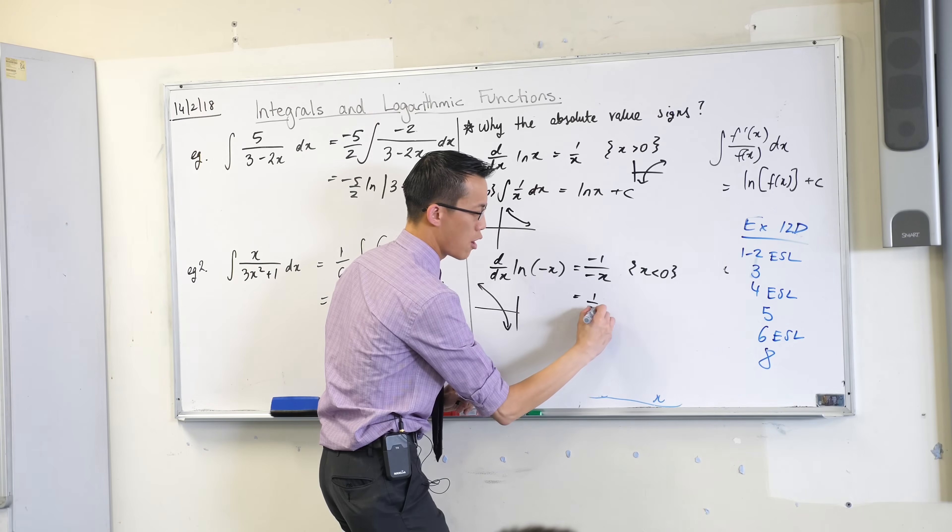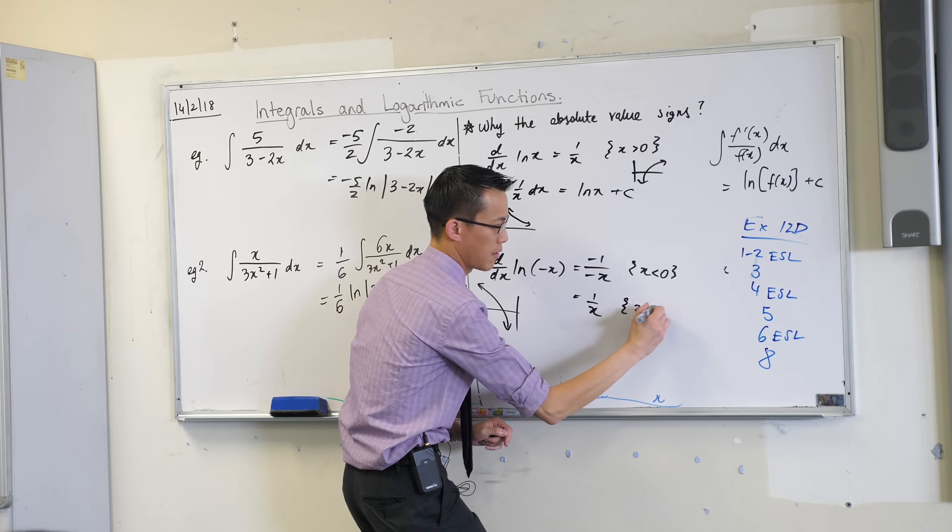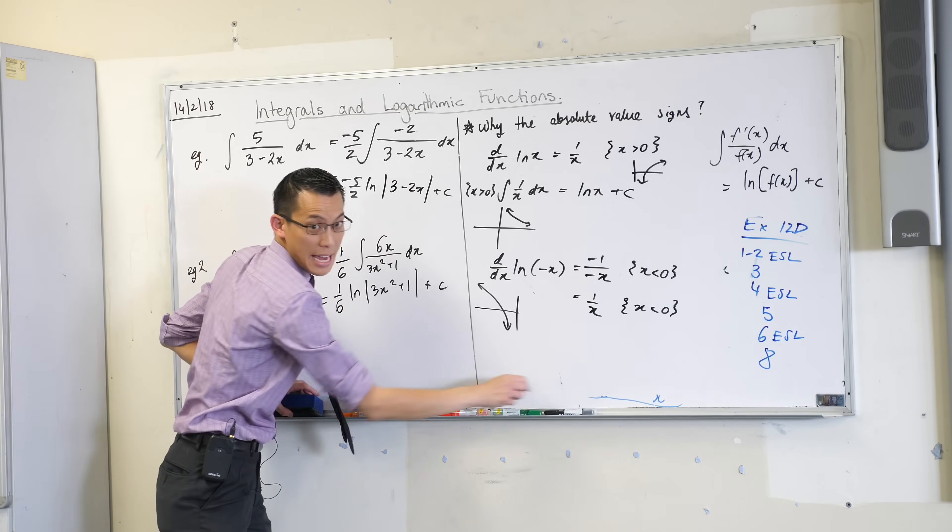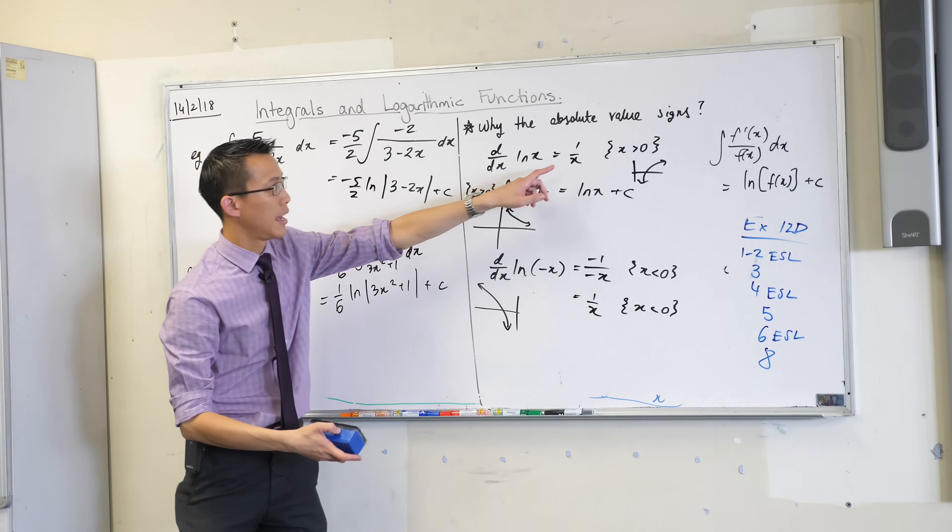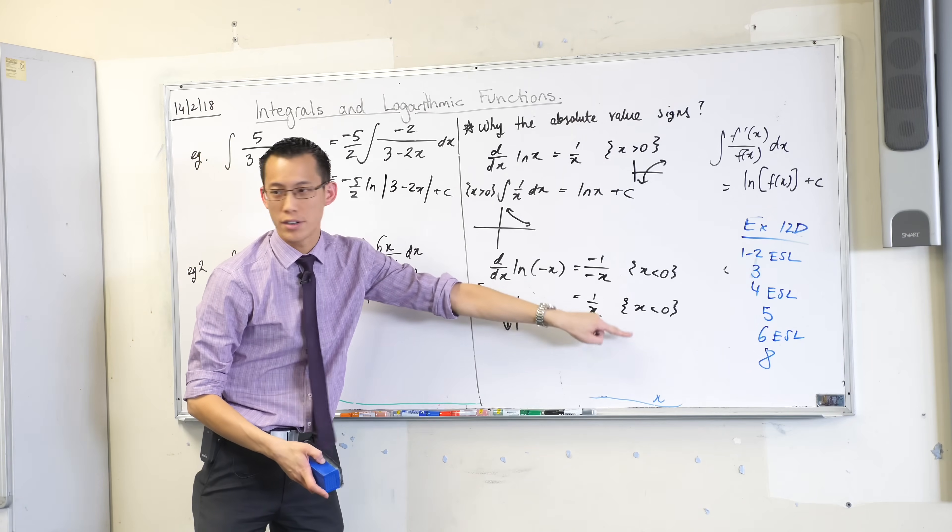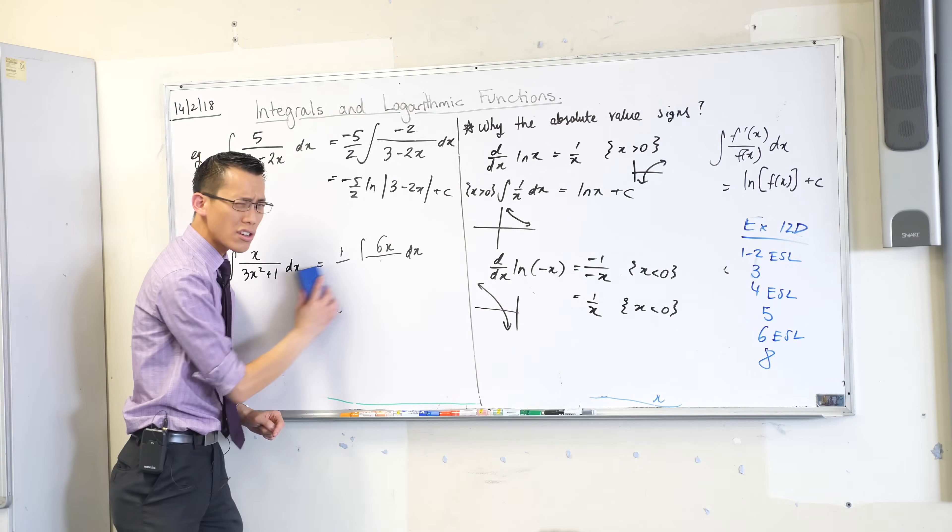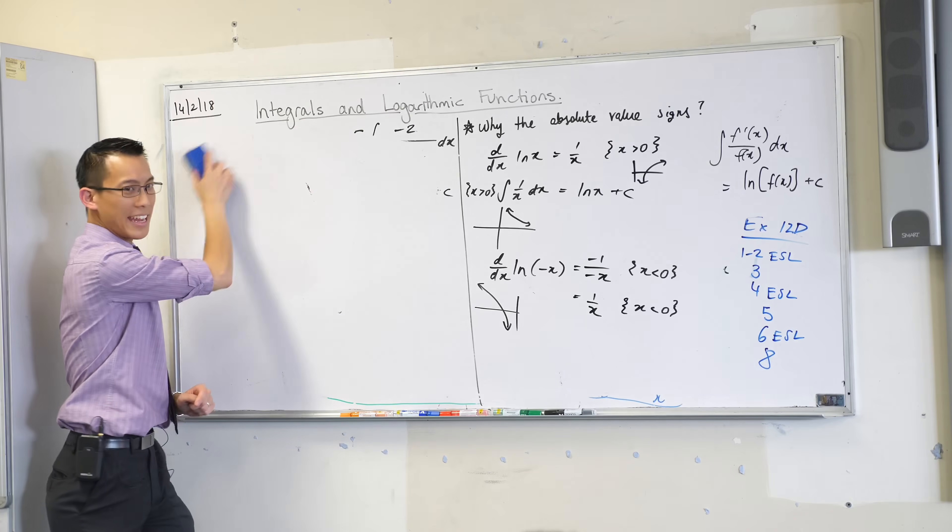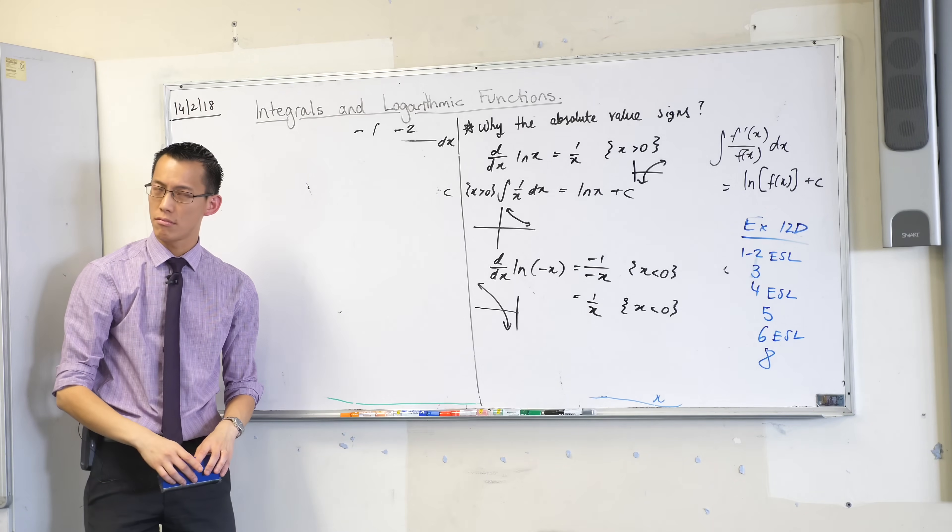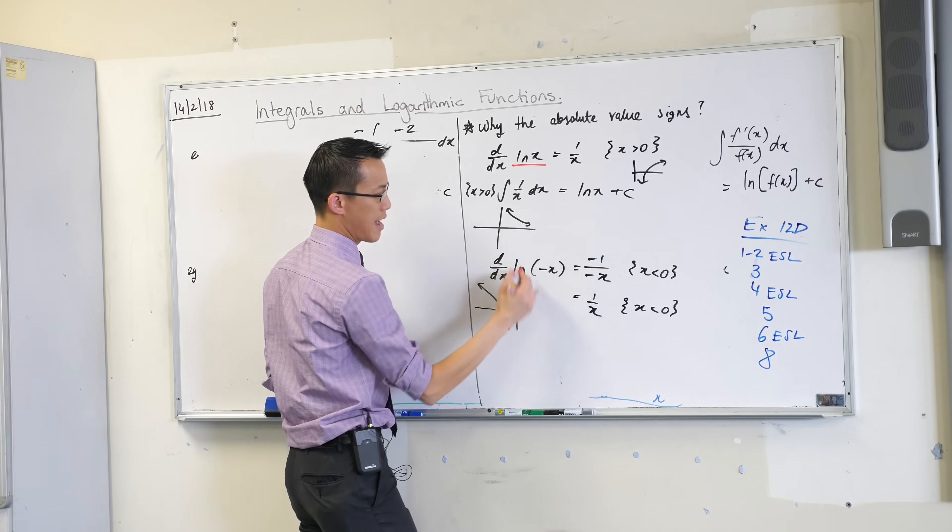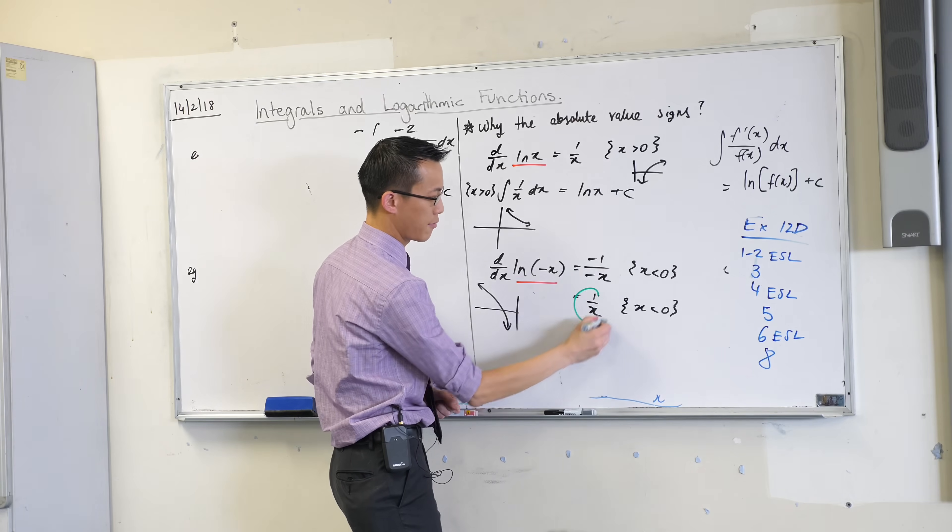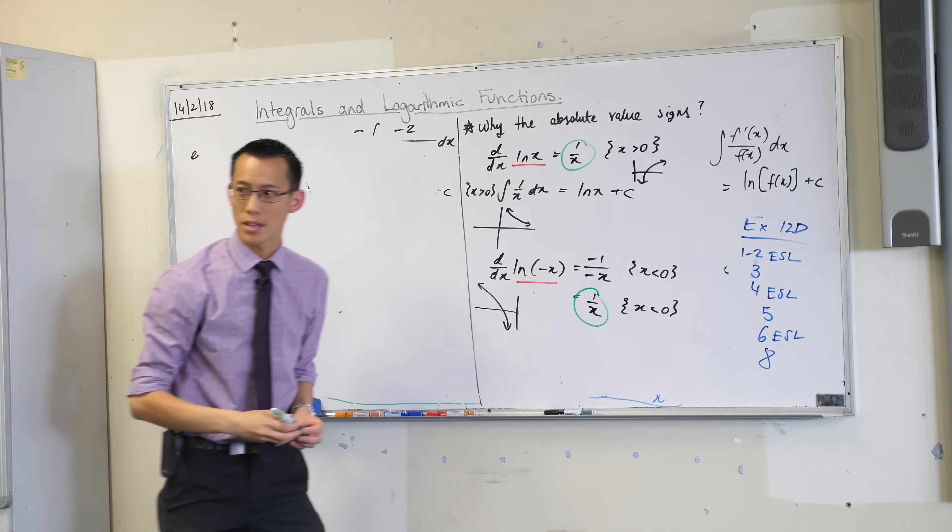Now I'll simplify. And I get one over x with the restriction, which is somewhat confusing, because that's the same derivative that I got here, but for a different domain. Does that make sense? So you can differentiate two different functions and end up with the same derivative. Differentiate two different functions, this guy and this guy, and you end up with the same derivative, this guy.